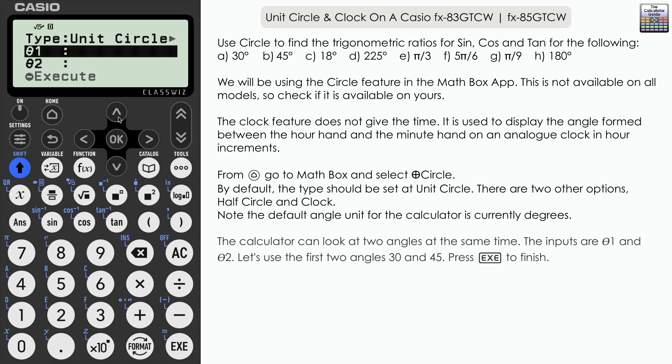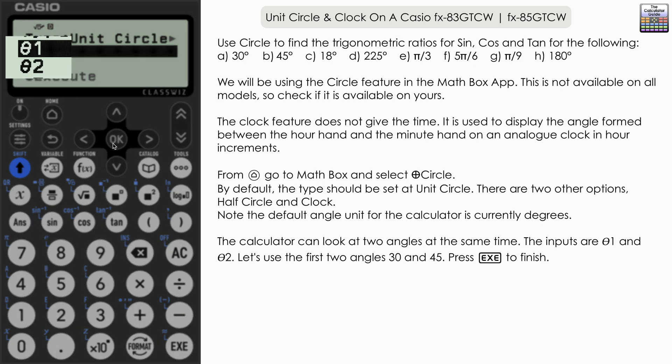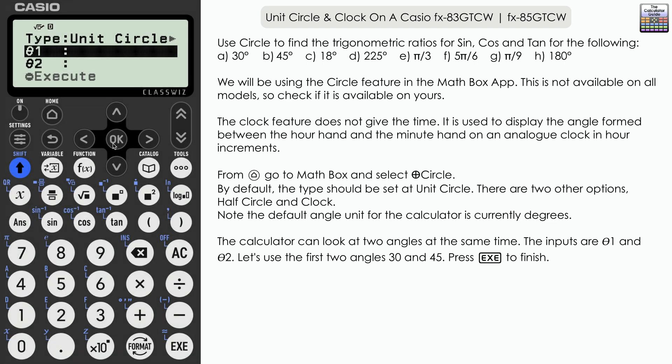Back to the input screen, we can input two angles at a time represented by theta 1 and theta 2. As our calculator is in degrees we're going to input our first angles in degrees. Theta 1 we're going to have as 30 and theta 2 as 45, then press execute to confirm.